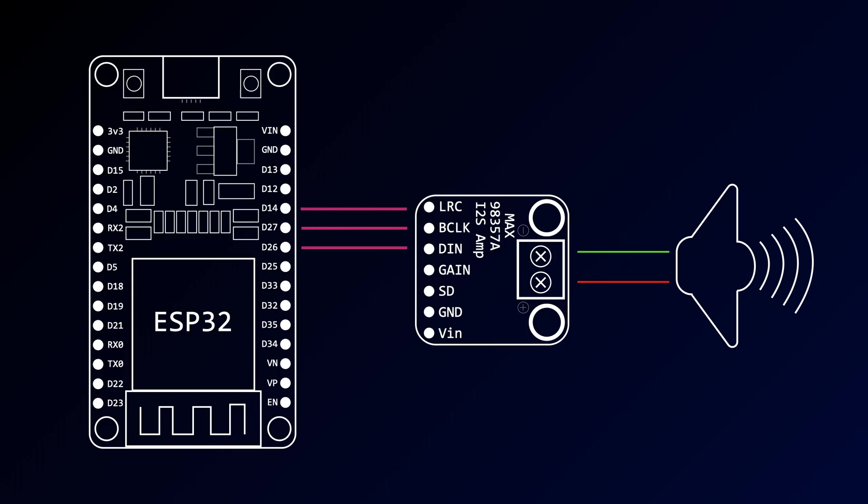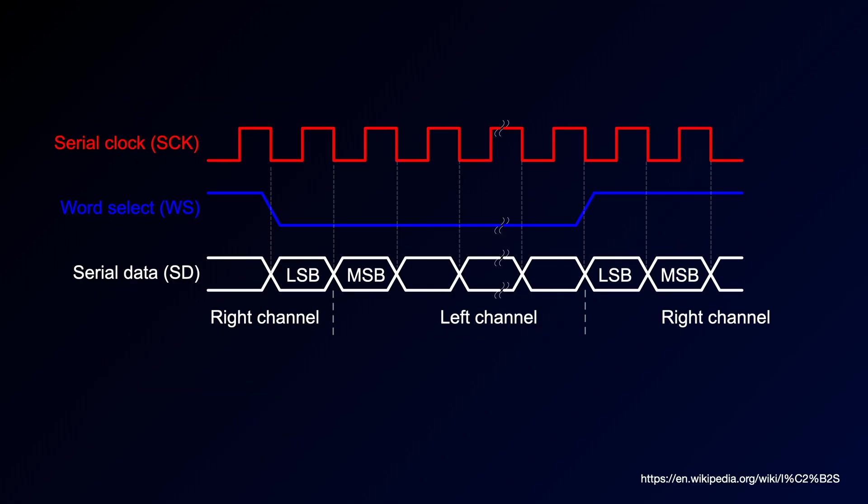One of the nice things about this board is that it has an I2S interface. This means we can feed it a digital signal straight from the ESP32. Our entire audio path is digital up until the speaker output.